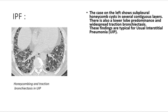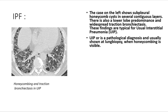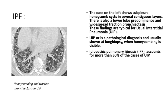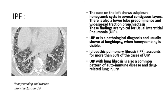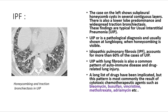Lower lobe predominance and widespread traction bronchiectasis are typical for usual interstitial pneumonia (UIP). UIP is a pathological diagnosis usually confirmed at lung biopsy; when honeycombing is visible, idiopathic pulmonary fibrosis (IPF) accounts for more than 60% of UIP cases. UIP with lung fibrosis is also a common pattern in autoimmune disease and drug-related lung injury; cytotoxic chemotherapeutic agents such as bleomycin, busulfan, vincristine, methotrexate, and adriamycin are most commonly implicated.